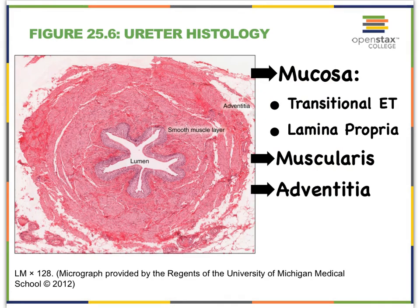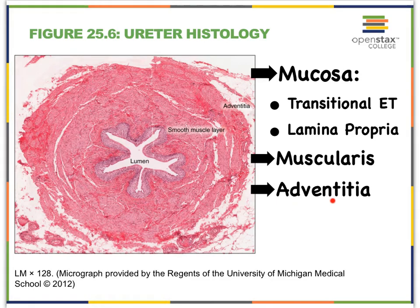Let's briefly look at the histology of a typical ureter. We see three major layers: the mucosa, which is made up of transitional epithelial tissue characteristic of the urinary tract, resting on a thin layer of areolar connective tissue called the lamina propria. We also see a layer of smooth muscle and then an adventitia layer.